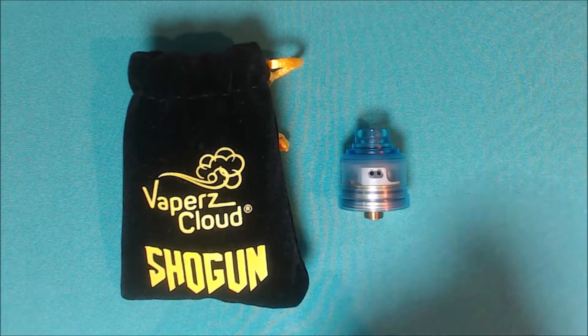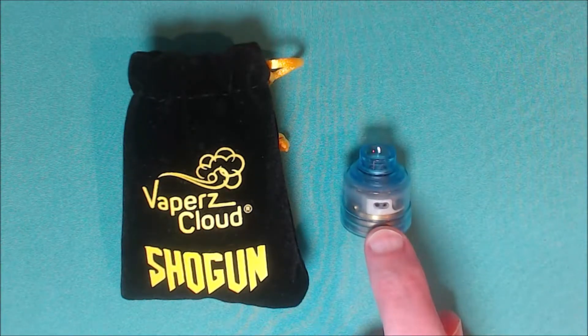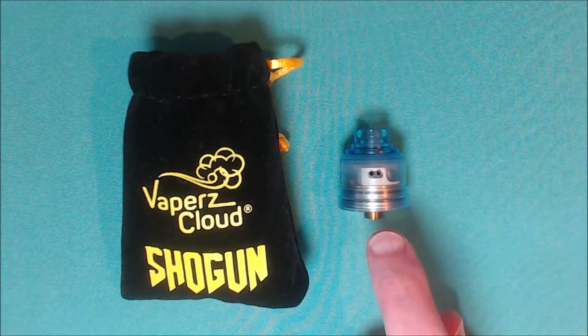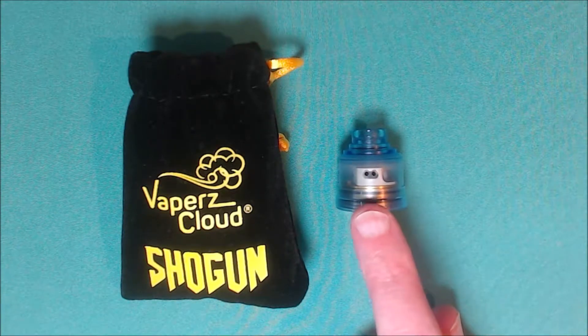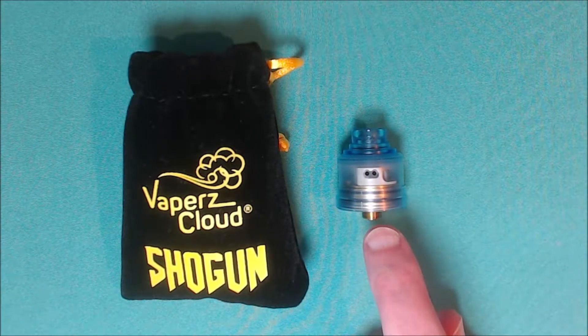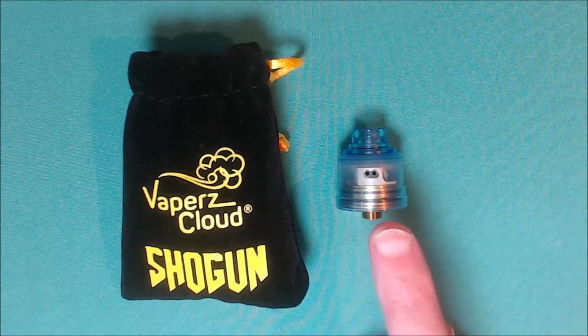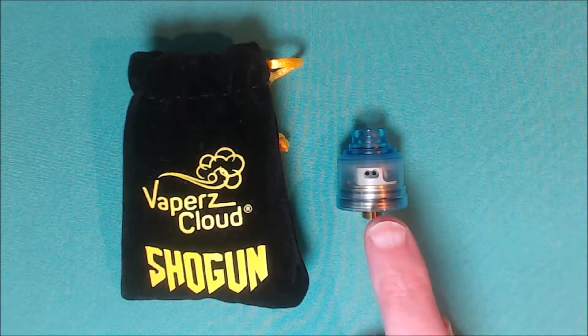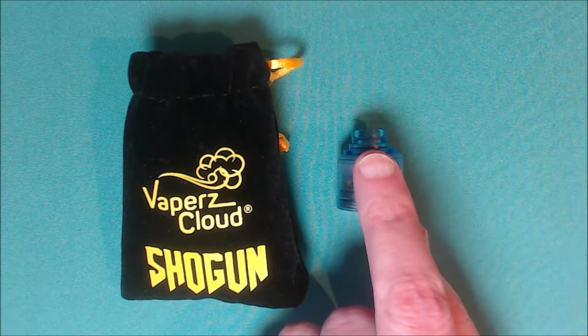It is a 22mm squonking RDA. It also comes with a beauty ring which can put it out to 24mm. It comes with two different airflow caps and is 510 drip tip compatible.